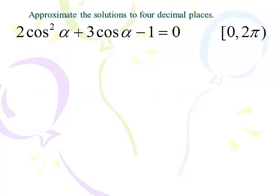Here's our first one. Approximate the solutions to four decimal places: 2cos²α + 3cosα − 1 = 0. We want all solutions between 0 and 2π. The first thing you'd probably try to do is factor it, but it's not factorable, obviously, because we're using the quadratic formula in this lesson.